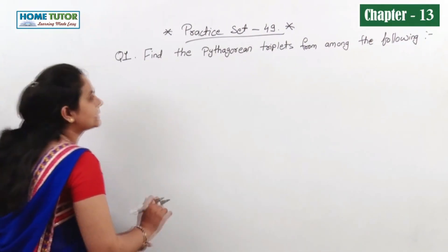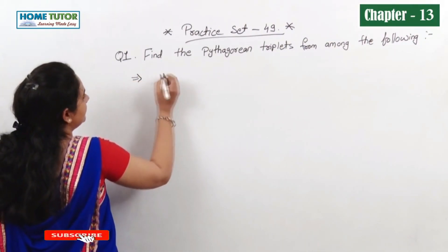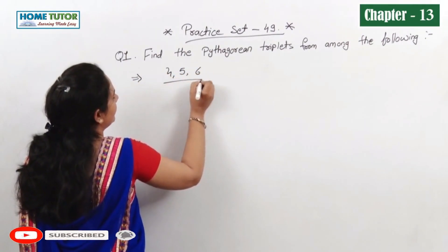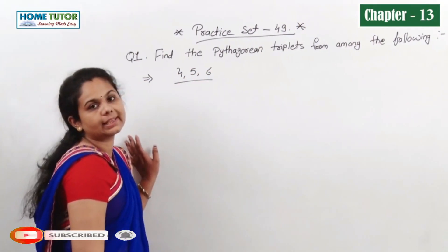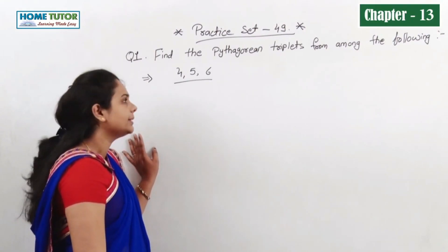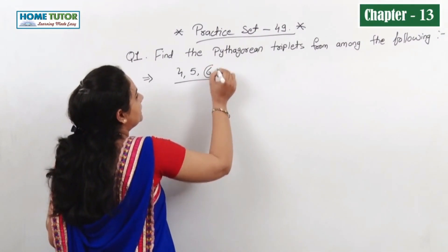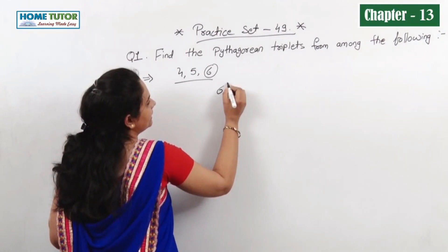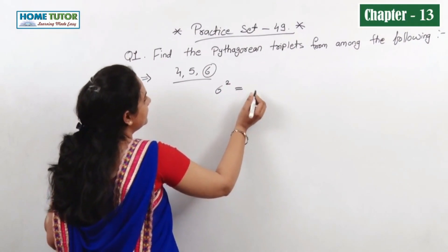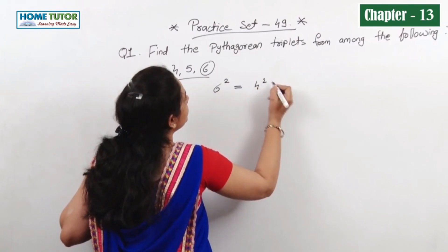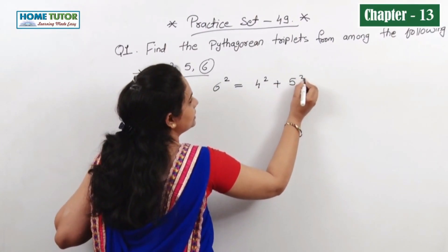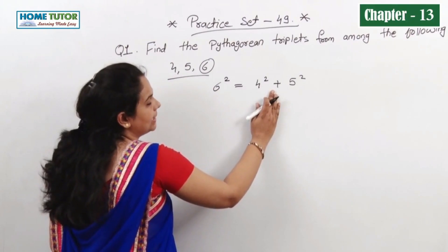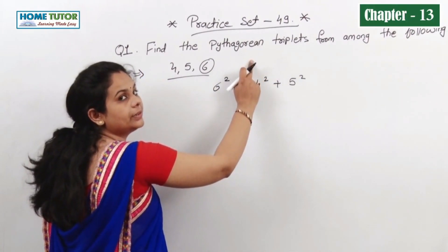The next example is 4, 5, 6. We have to check whether these three numbers form a Pythagorean triplet. The biggest number is 6, so we check: 6 squared should be equal to 4 squared plus 5 squared. If LHS equals RHS, then it is a Pythagorean triplet.